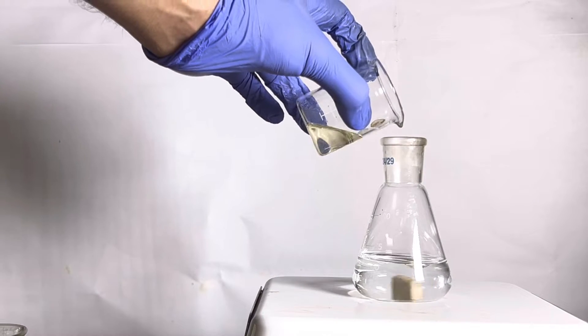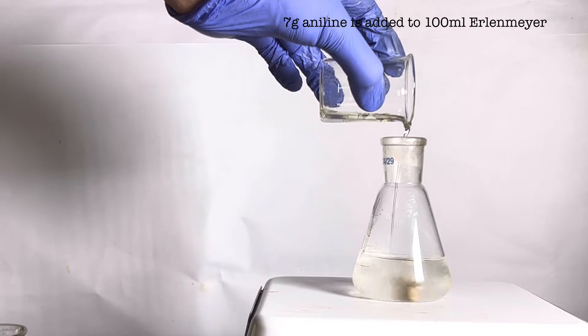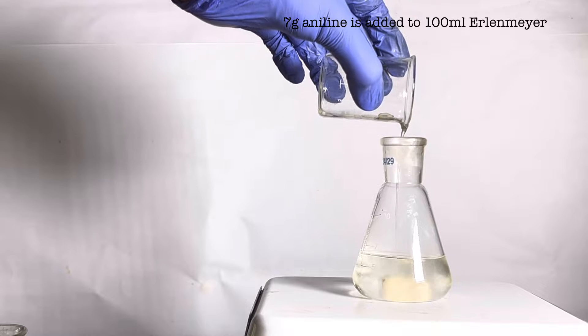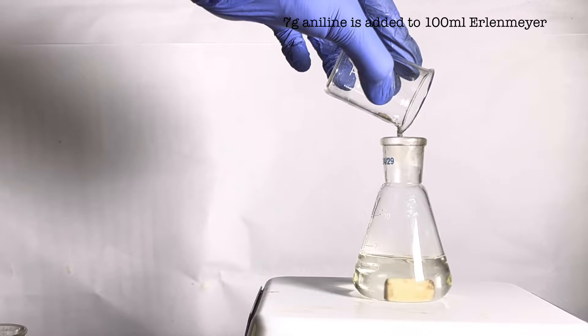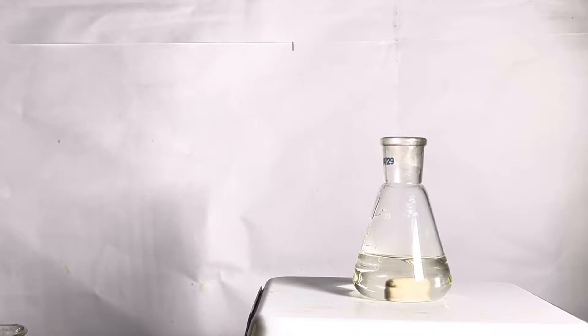Next, 7 grams of freshly distilled aniline was added to the flask. Aniline should be freshly distilled, otherwise the solution appears dark due to the presence of impurities. Aniline dissolves in the hydrochloric acid forming aniline hydrochloride.